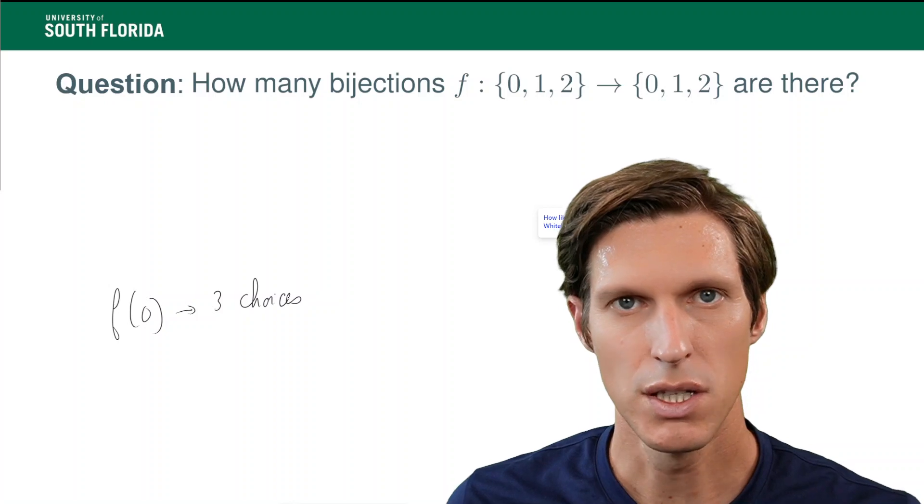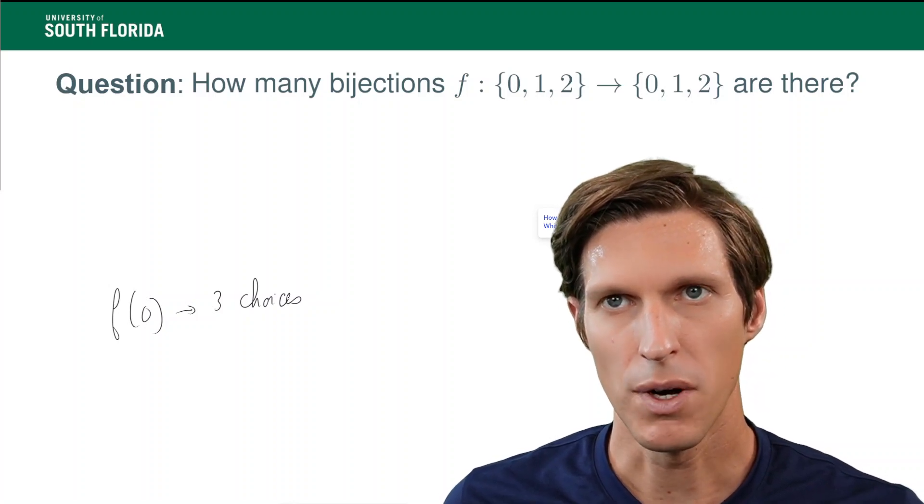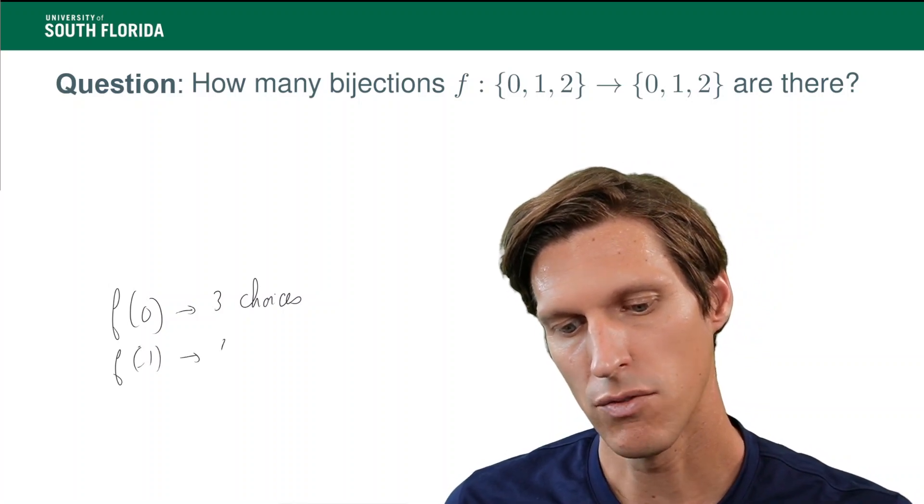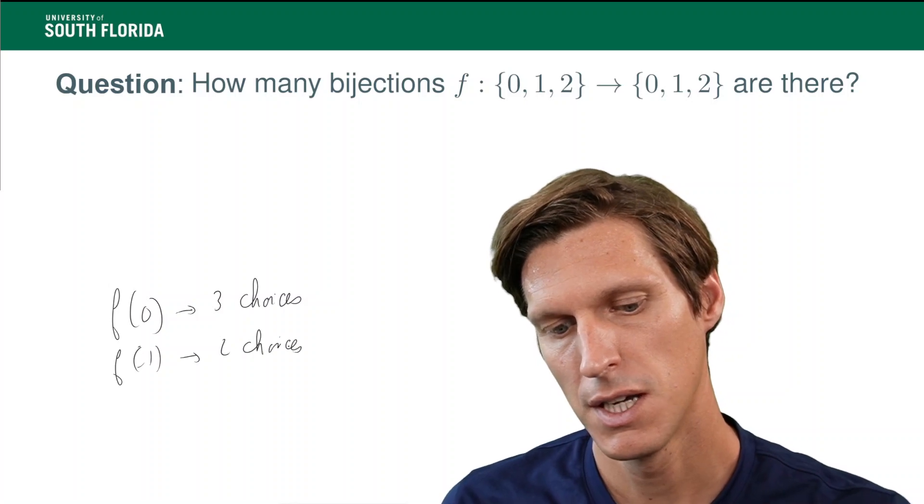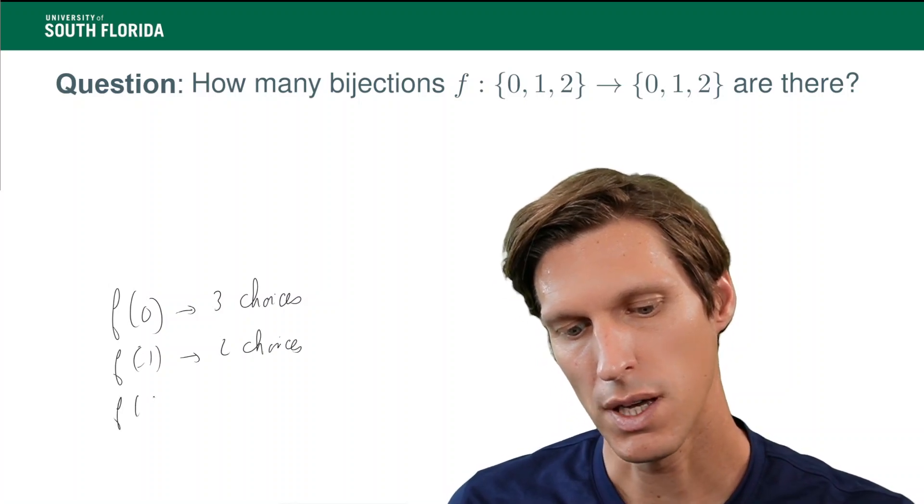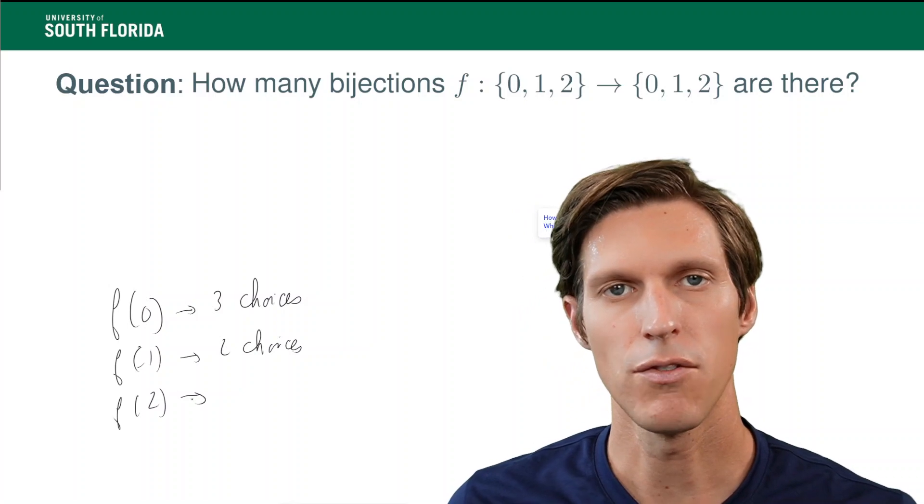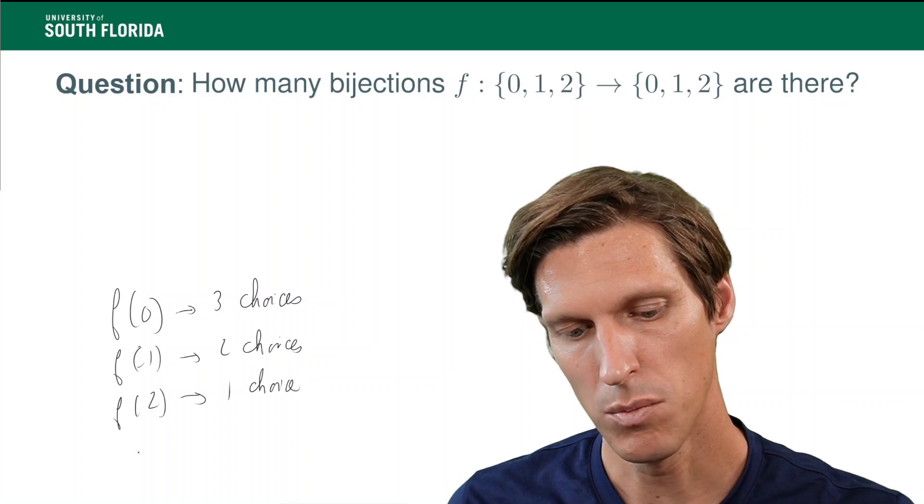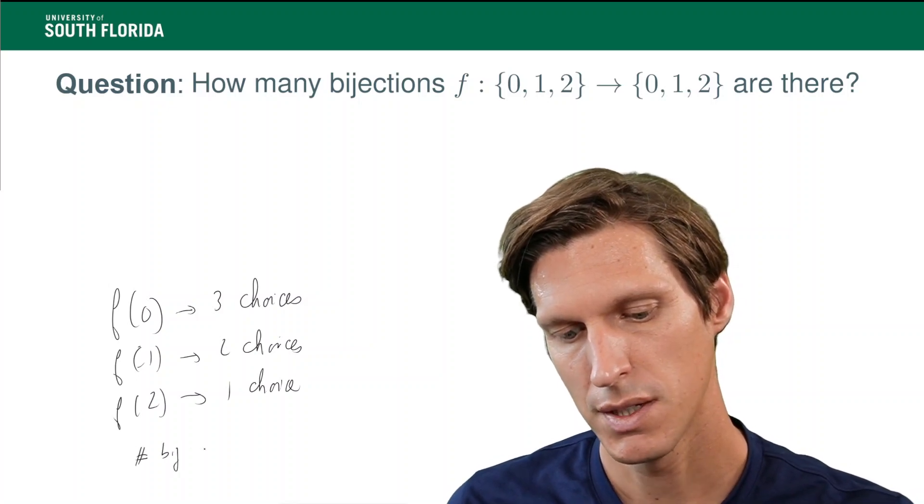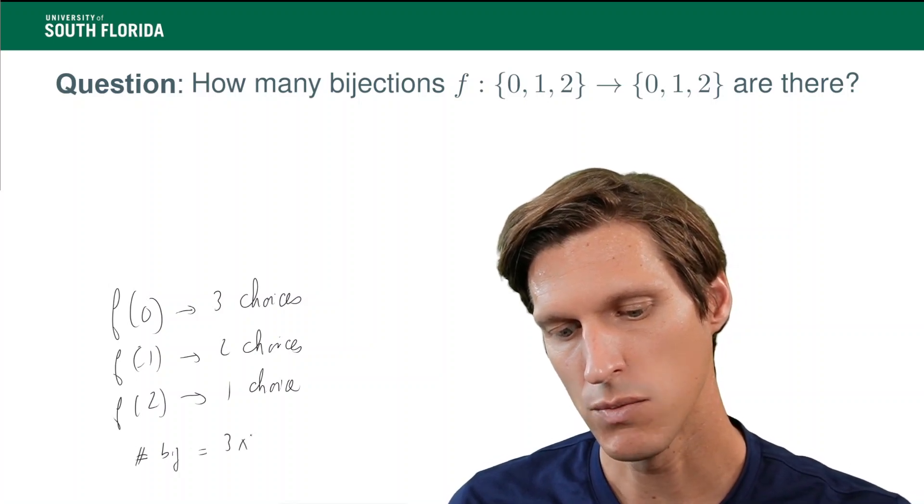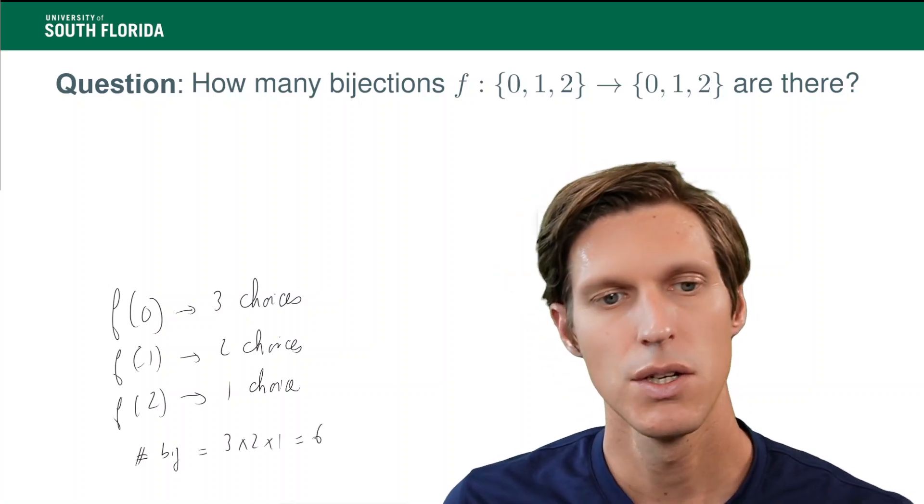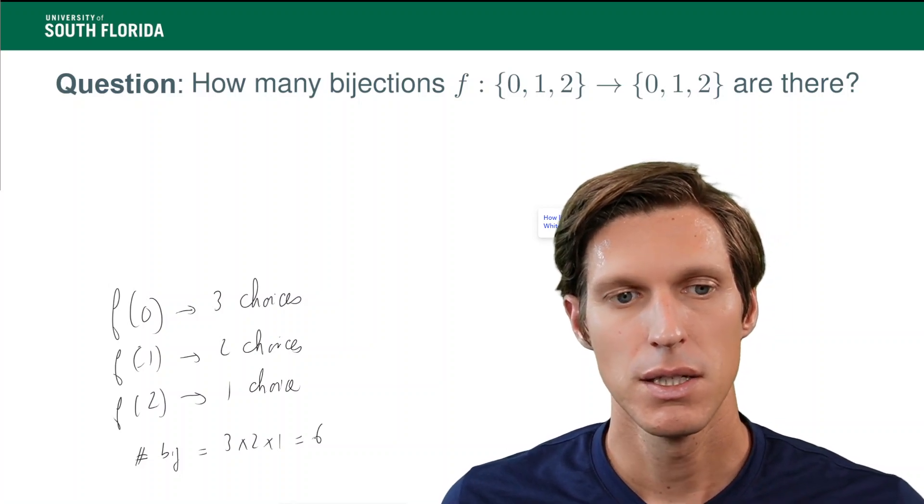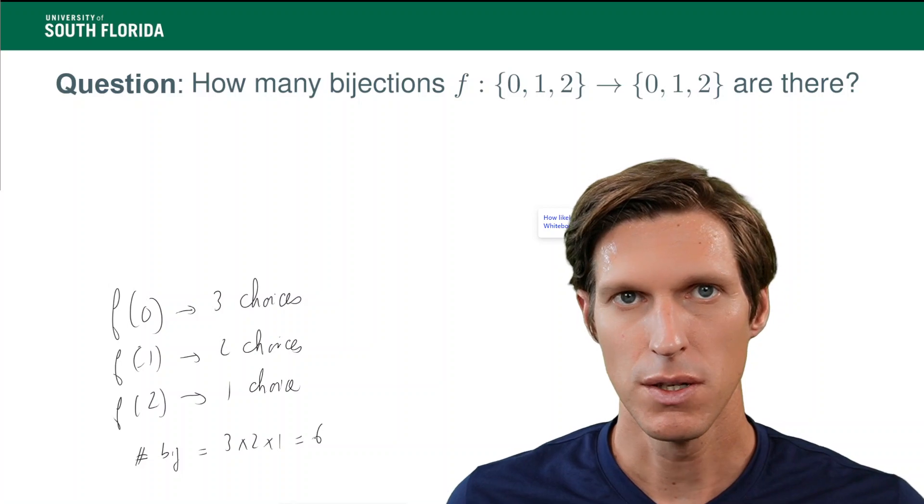But then, for f to be a bijection, it has to be that f of 0 is different than f of 1 and f of 2, which means that by the time you choose f of 1, then you have only two choices. And then f of 2 has to be different than f of 0 and f of 1. You only have one choice. And then the number of bijections then is going to be 3 times 2 times 1 equals 6. So, you see that if a function is a bijection, so if you can identify that, then you only have six choices for a bijection.